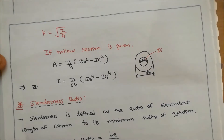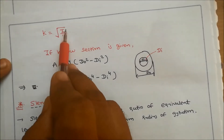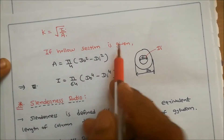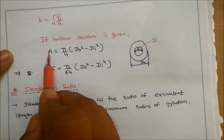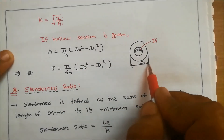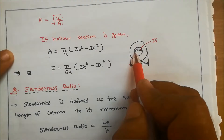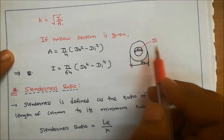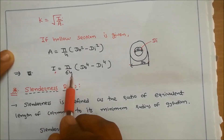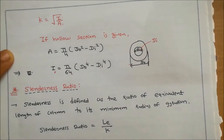The second important equation is K, the radius of gyration, given by K = √(I/A), where I is moment of inertia and A is area of cross section. For a hollow circular section, A = (π/4)(Do² − Di²) and I = (π/64)(Do⁴ − Di⁴), where Do is outer diameter and Di is inner diameter.